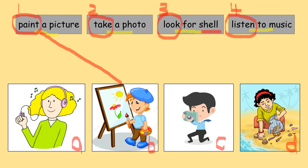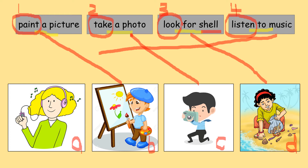Next, number two: take a photo. Is it A, C, or D? The answer is C. Next, number three: look for shell. Shell is macam kerang — siput kerang, lala, something like that. The answer is D. And the last one, listen to music — the answer is A.